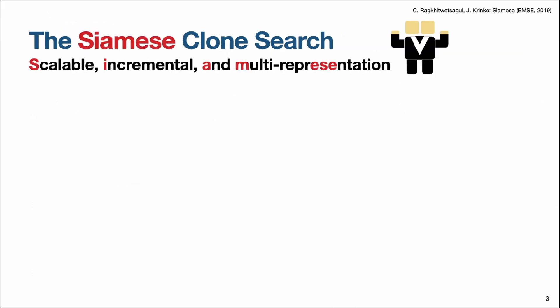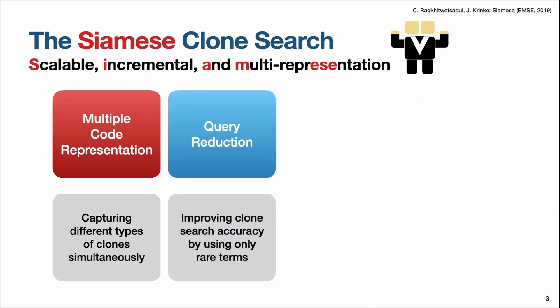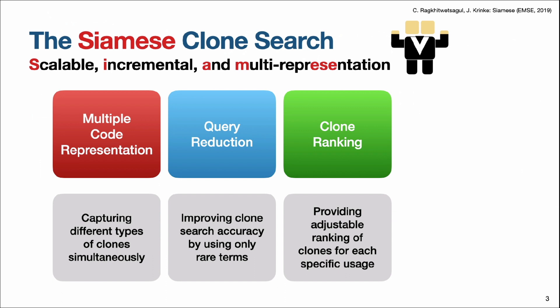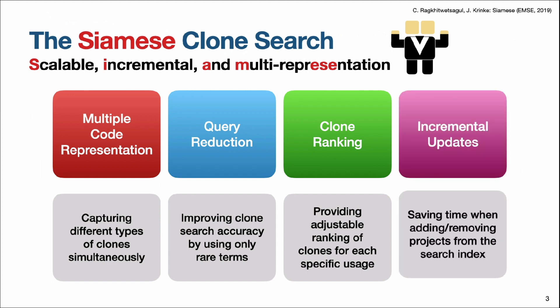So we would like to propose the Siamese clone search approach, which has: multiple code representations that capture different types of clones at the same time; query reduction that improves clone search accuracy by keeping only rare terms in the search keywords; clone ranking that allows the user to adjust the ranking of clone results based on their specific needs; and incremental updates that save time when adding or removing specific projects from the large code search index.